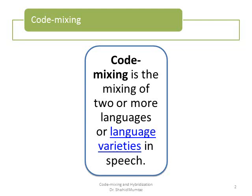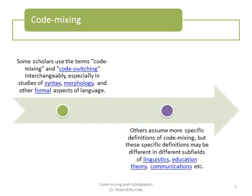Code mixing is the mixing of two or more languages or language varieties in a speech. Some scholars use the term code mixing and code switching interchangeably, especially in the studies of syntax, morphology, and other formal aspects of language. Others assume more specific definitions of code mixing, but these specific definitions may be different in different sub-fields of linguistics, education, communication, medicine, and so on.